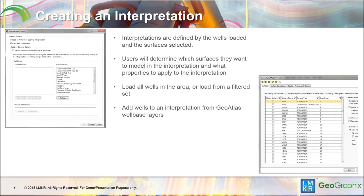I'm going to go through a few quick slides introducing Smart Section before we get into the demonstration. When you're first using Smart Section, you'll want to create an interpretation. If you've used SizeVision before, it's much the same way — you load data, apply it to an interpretation, and work inside that interpretation. Different areas will have different interpretations with different sets of data. Users will determine the surfaces and wells they want to load, and can also add wells from a GeoAtlas layer.